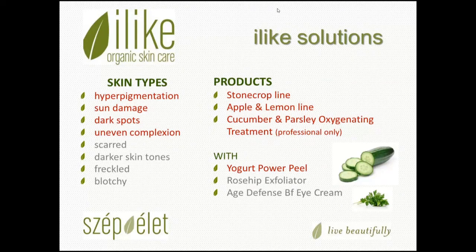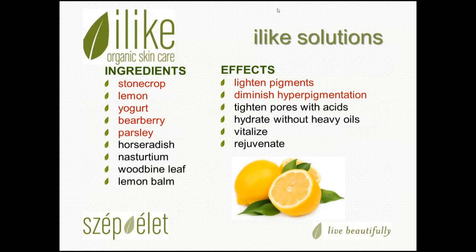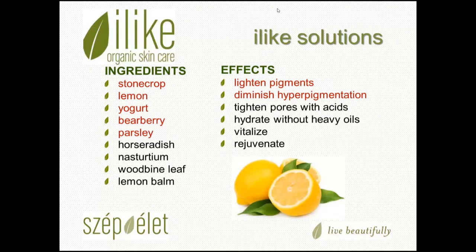Product lines we have to address our hyperpigmented guests are our Stone Crop line, Apple and Lemon, our Cucumber and Parsley Oxygenating Treatment, and we also like to use our Yogurt Power Peel or Rose Hip Exfoliator. Our Age Defense Bioflavonoid Eye Cream goes nicely with these products as well. We're going to go into more detail about these ingredients — specifically stone crop, lemon, yogurt, bearberry, and parsley. Horseradish, nasturtium, woodbine leaf, and lemon balm are also included in many products, but we'll focus on the most active ingredients.